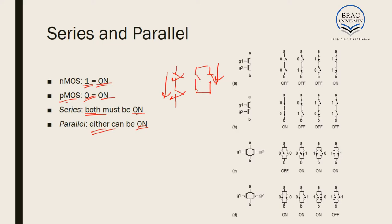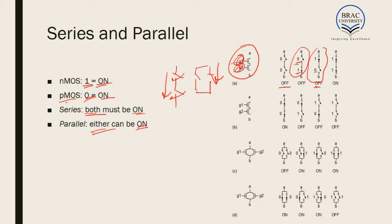In case of two NMOS in series: if both G1 and G2 are zero, no current flows and it is off. If G1 is one and G2 is zero, G1 turns on but G2 remains off, so no current flows. If G1 is zero and G2 is one, G2 turns on but G1 is off, so no current flows. If both G1 and G2 are one, both switches are on and current flows.